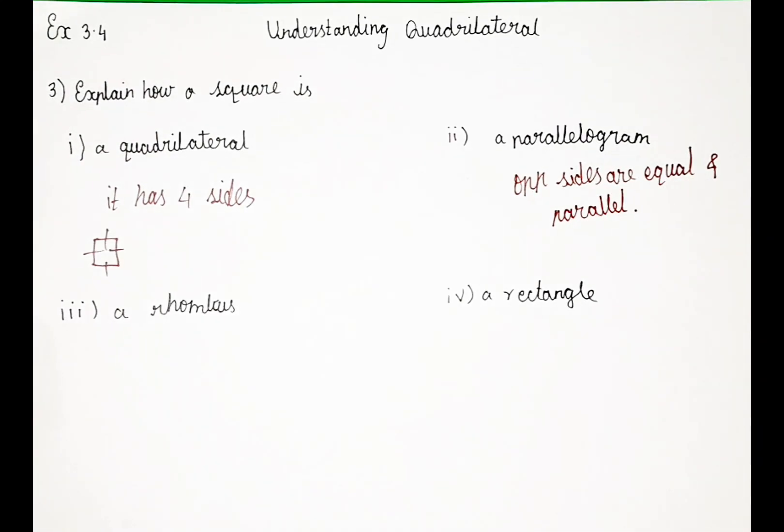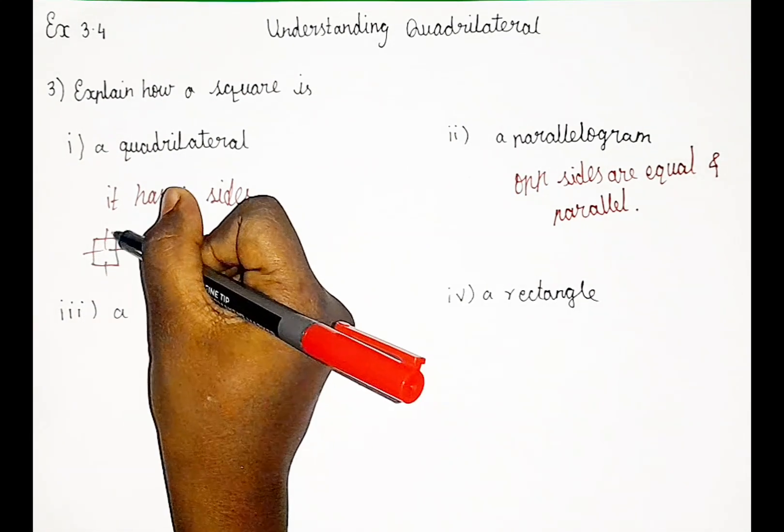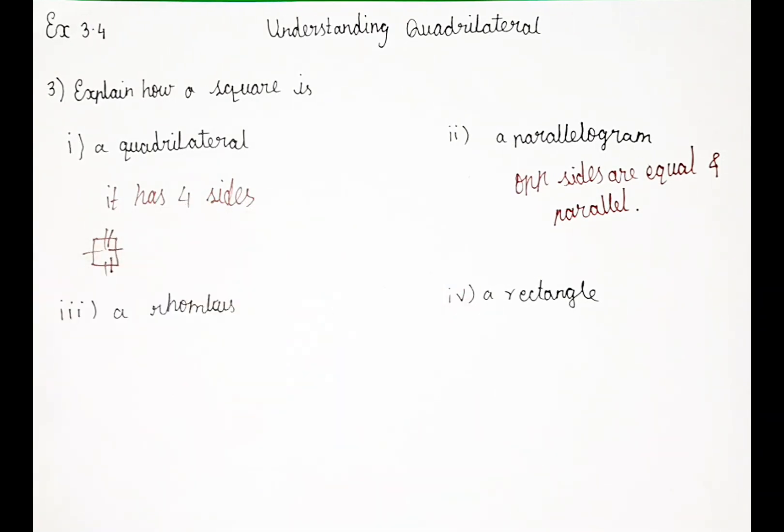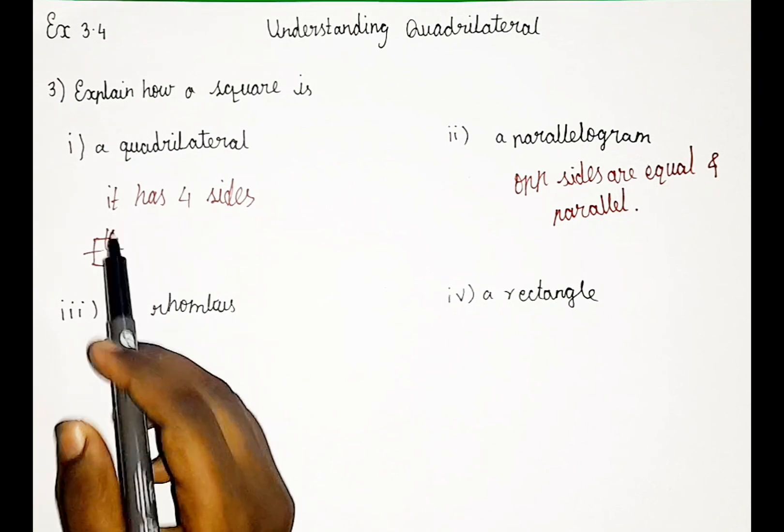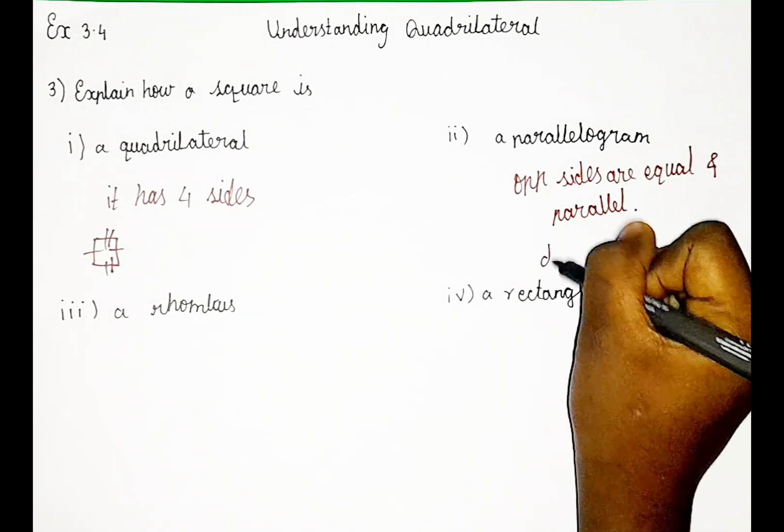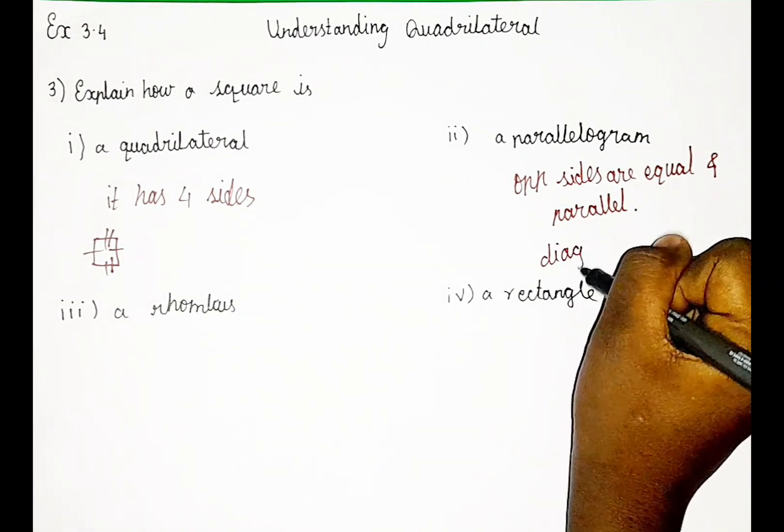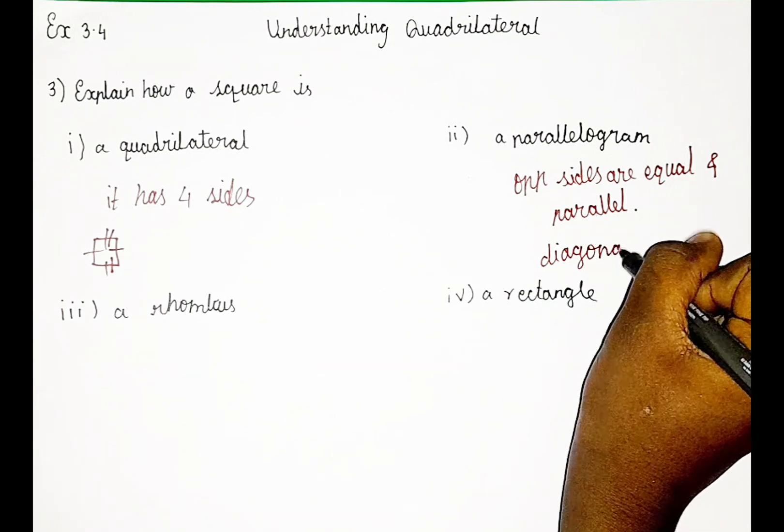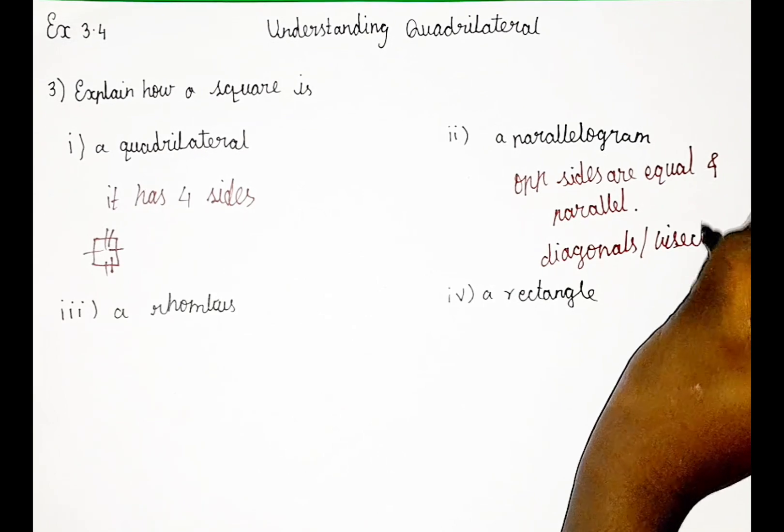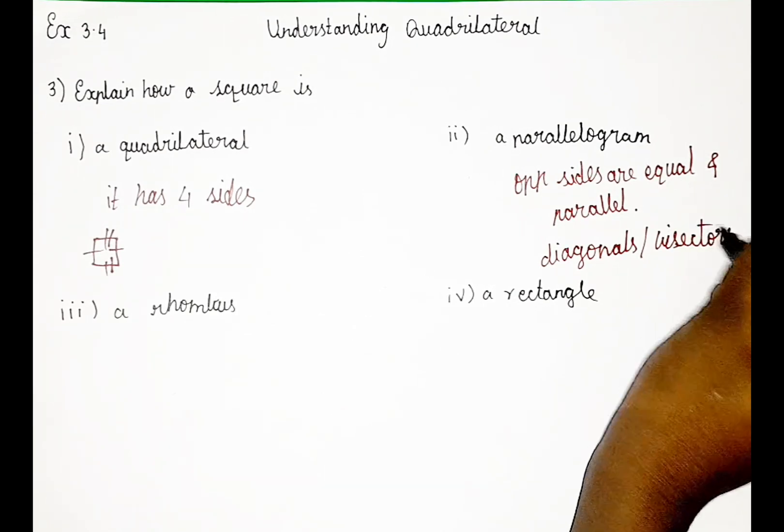Okay, this is a square, right. In this, this side is equal to this side. This side is equal to this side. And they are also parallel. It is just a property that you have to know. And in a parallelogram also we have diagonals. In square also we have diagonals or bisector.